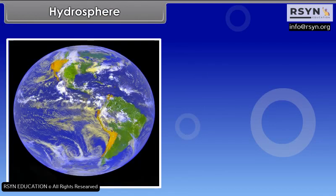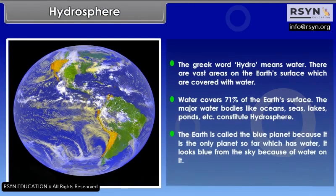The Greek word hydro means water. There are vast areas on the earth's surface which are covered with water. Water covers 71% of the earth's surface. The major water bodies like oceans, seas, lakes, ponds, etc. constitute the hydrosphere. The Earth is called the blue planet because it is the only planet with water on it. It looks blue from the sky because of water on it.